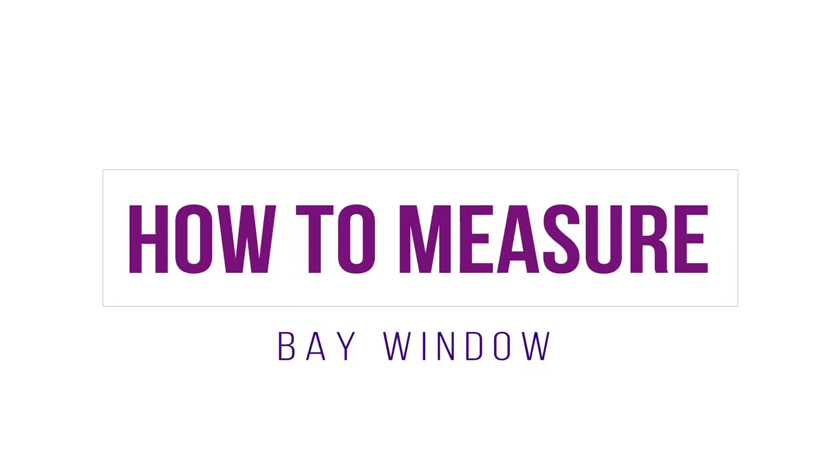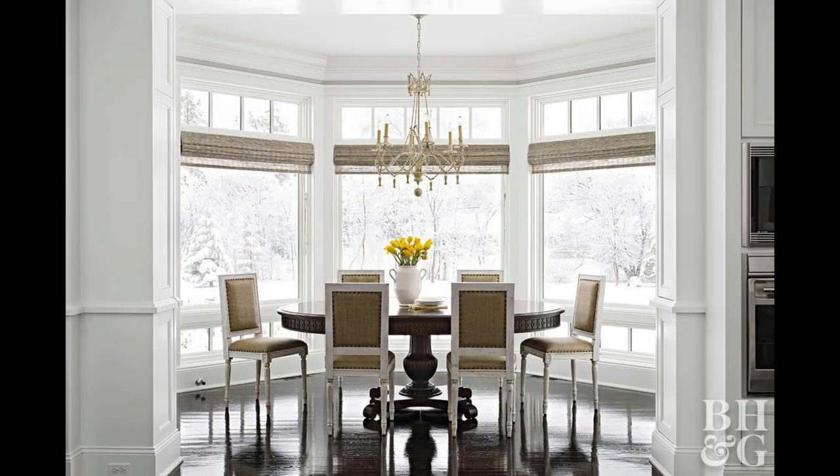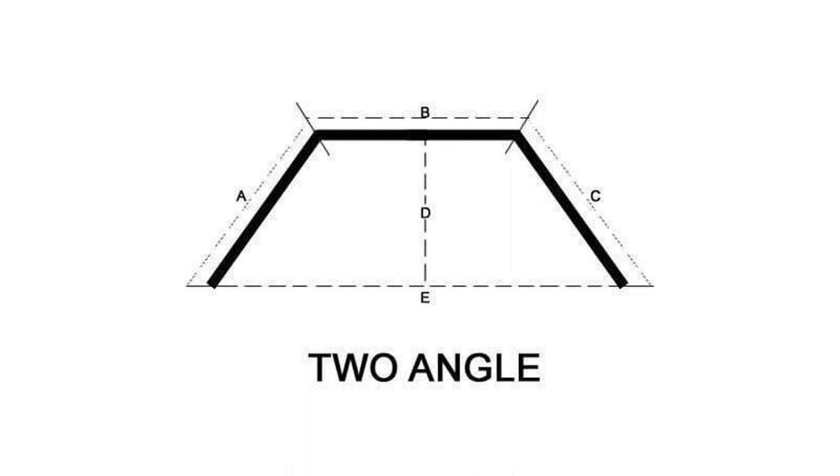To measure a bay window is a bit more complex. The number of angles of your bay window will determine which formula you should follow. For a two-angle bay, measure the length of each window panel A, B, and C, including the inches you want to add for the stackback of the curtains on the left and right. Measure the total depth D from the front to the middle of the central window pane, and lastly measure the total width E of the window from left to right.